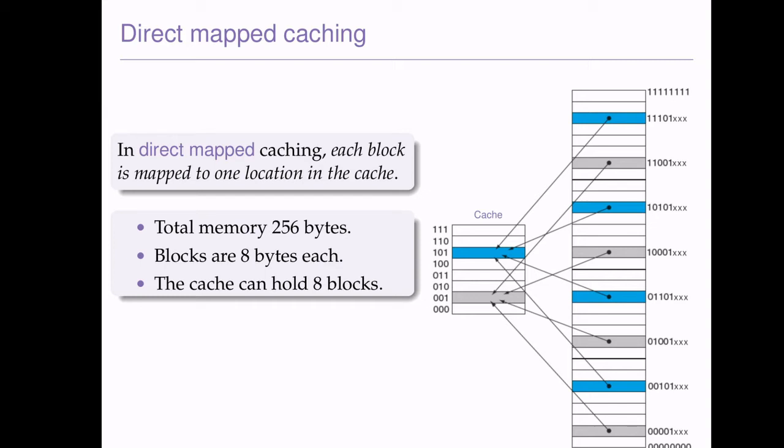The cache can hold 8 blocks. We'll need 3 bits to represent the bytes in a block, and we'll also need 3 bits to represent the blocks in the cache, because they both have 8 different values and 3 bits can represent 8 different values. Just by looking at this, we figure out how many bits we need to represent each byte in a block, and how many bits we need to represent the blocks in the cache. Because addresses are 8 bits long and we've only used up 6 bits, we need to find the extra 2 bits.